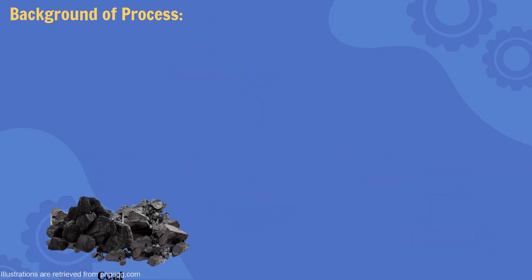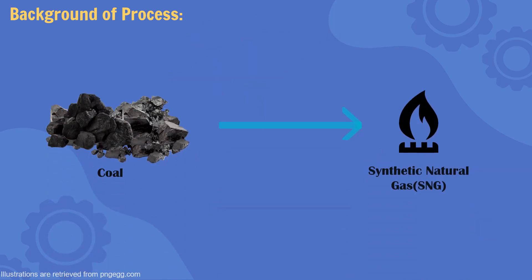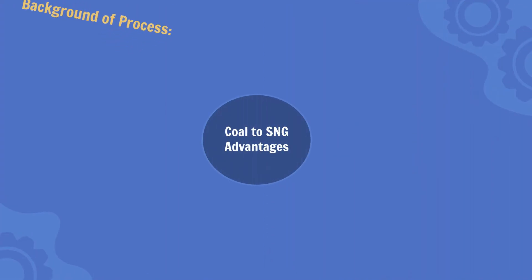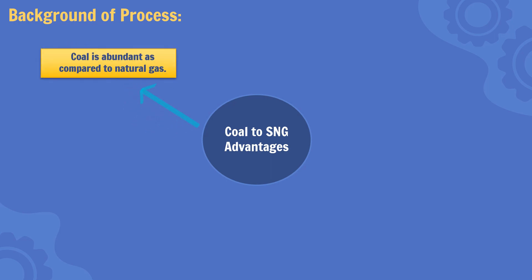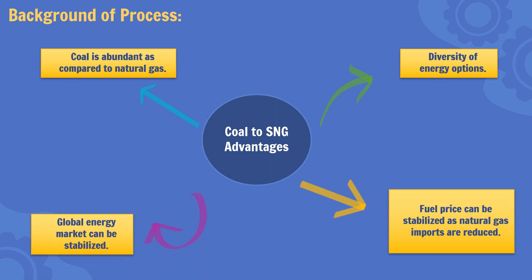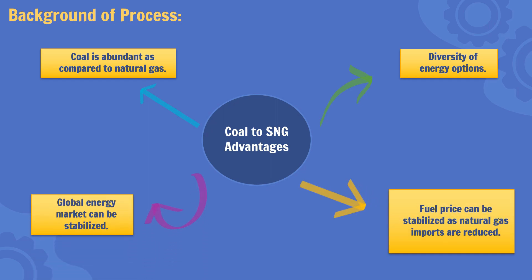Among the many production methods, coal to SNG is the most widely used and commercialized method. The advantages of coal to SNG are: coal is more abundant compared to natural gas, energy options can be diversified, and fuel prices and the global energy market can be stabilized.